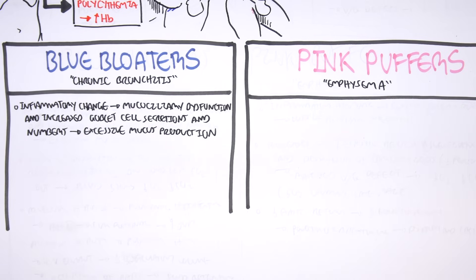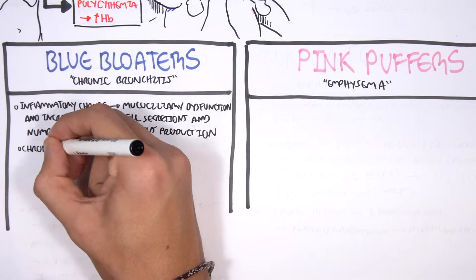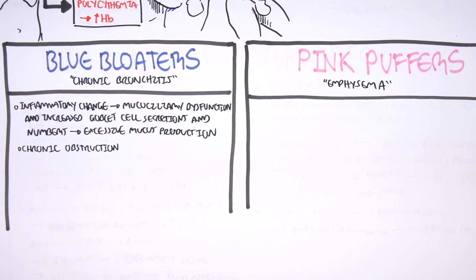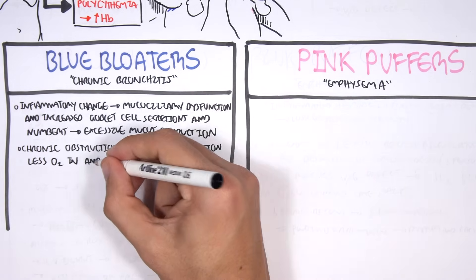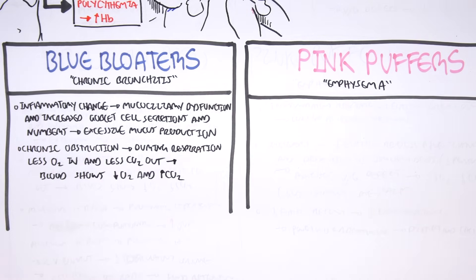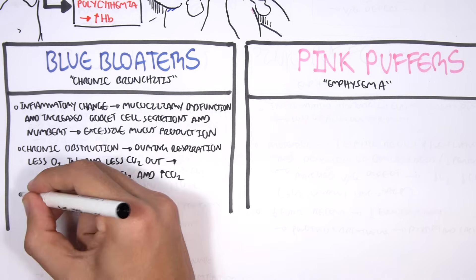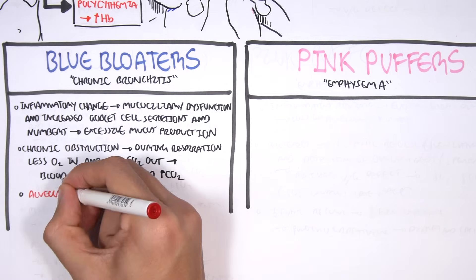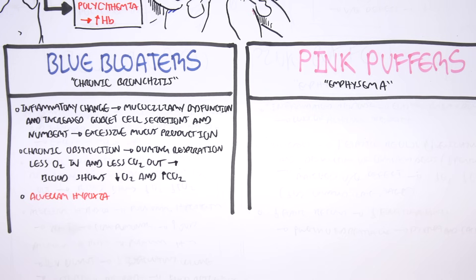Just recapping, chronic obstruction means that during respiration, less oxygen comes in and less carbon dioxide goes out, which leads to decrease in oxygen in the blood and increase in carbon dioxide in the blood. Because in chronic bronchitis oxygen is not properly getting into the alveoli, we get alveolar hypoxia. When this happens, the pulmonary vessels will constrict so that it can shunt the blood flow to healthier alveoli. But when you get pulmonary vasoconstriction, you can get an increase in pulmonary vascular pressure, so pulmonary hypertension.